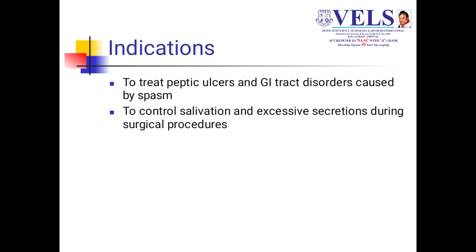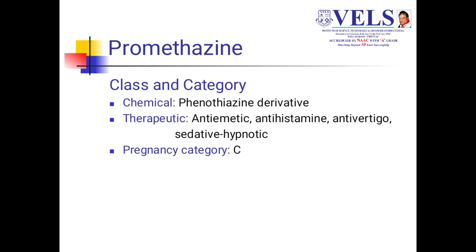Hyoscine is indicated to treat peptic ulcer and GI tract disorders caused by spasm. It also controls salivation and excessive secretion during surgical procedures. The next group of drugs is promethazine, which comes under the anti-emetic, antihistamine, antivertigo, and sedative-hypnotic categories. Chemically it is a phenothiazine derivative.